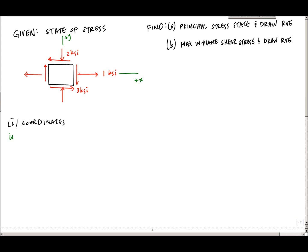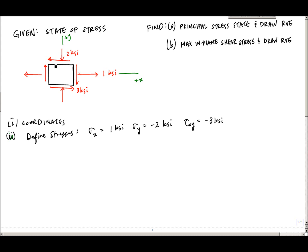The second thing to do is label or define the stresses. In this case, sigma_x is equal to positive 1 ksi because it's causing tension. On the opposite face, we have compression, so sigma_y is minus 2 ksi. For the shear stress tau_xy, I am on the x face in the negative y direction — positive times negative gives a negative — so tau_xy is minus 3 ksi. This also works on the other faces: on the positive y face in the negative x direction, or on the negative y face in the plus x direction, both lead to minus 3 ksi.